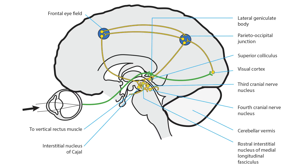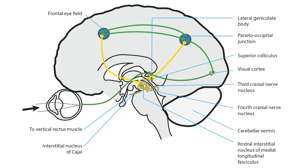If you are shifting your gaze to a target you see in your peripheral field, the signal goes from the eyes to the primary visual cortex. From there, it connects to occipital, parietal, and frontal regions in both hemispheres.